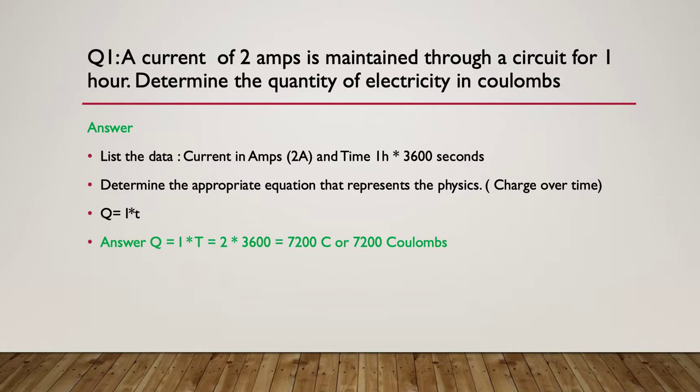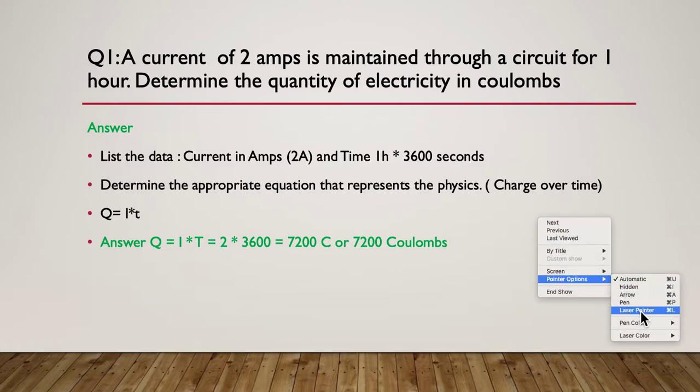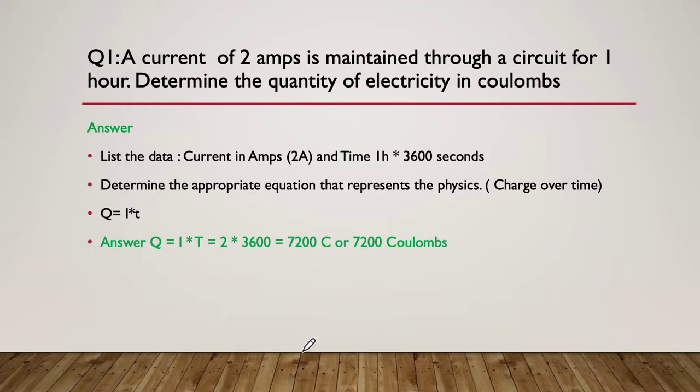So now let's answer the question. So our formula was Q equals I times T. So we have our two amps multiplied by 3600, giving us an answer of 7200 C, or you could also use the whole word coulombs.